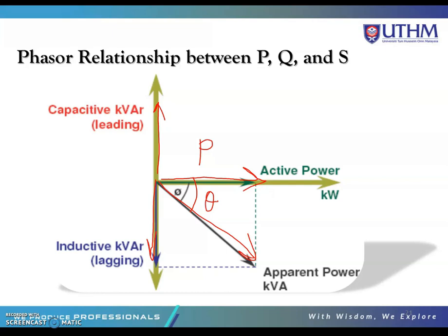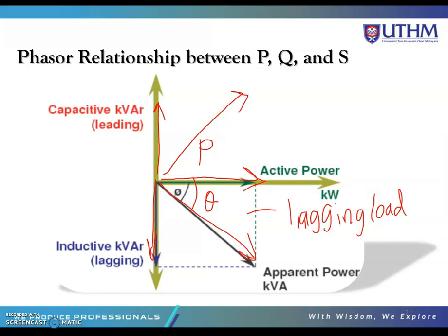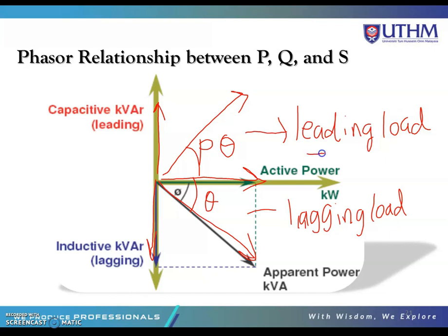For lagging or inductive loads, theta is negative. For leading loads, theta is positive. So in the phasor diagram, the leading case shows theta above the horizontal axis and the lagging case shows theta below.